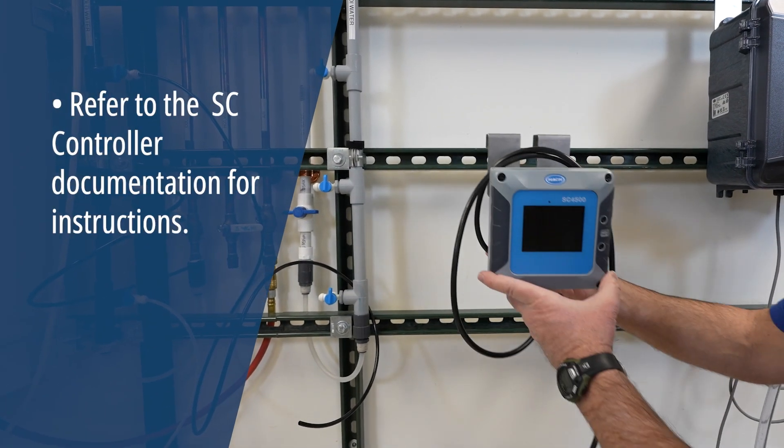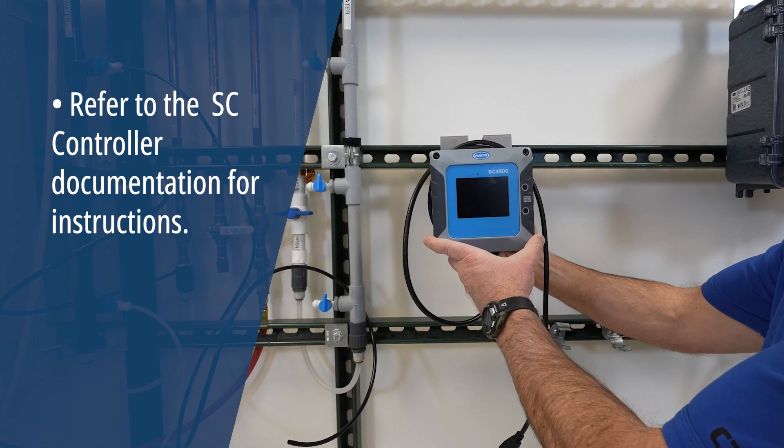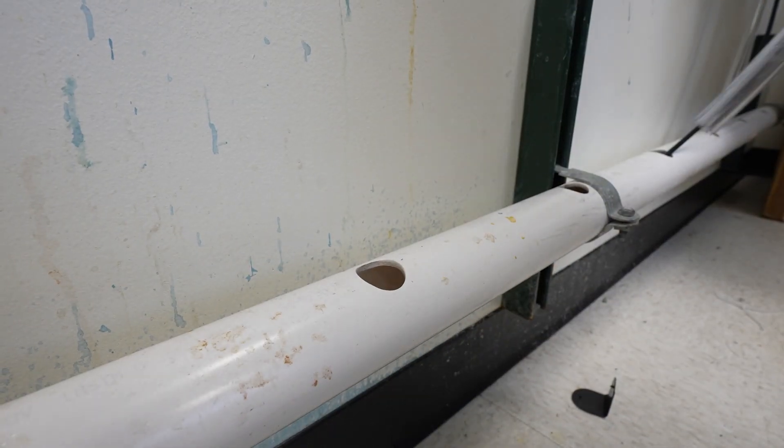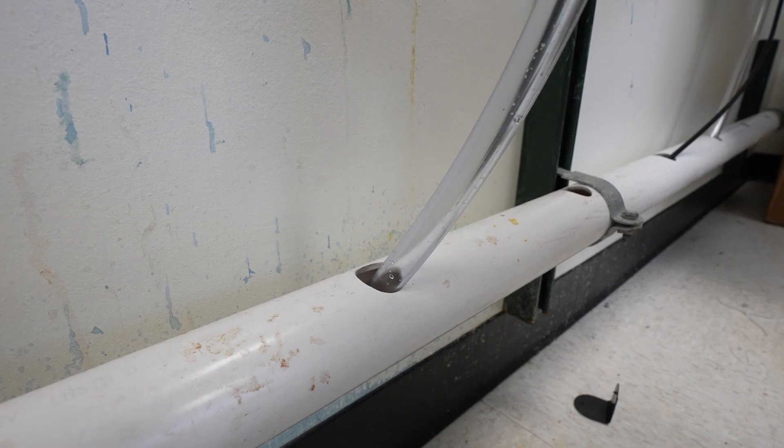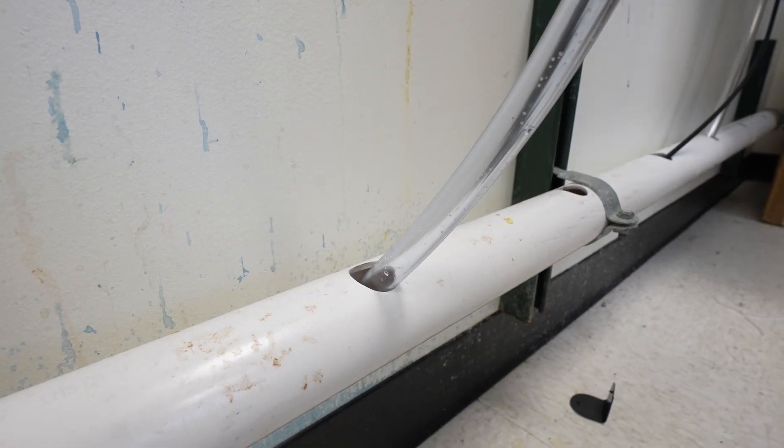Attach the controller to a wall, panel, or pipe. Install the analyzer near an open drain, where the analyzer drain can be routed with a continuous downward slope.